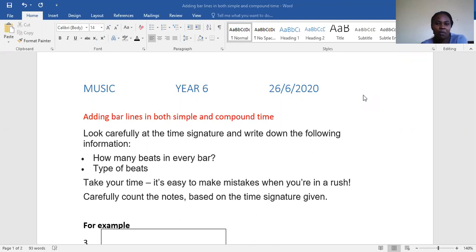The first thing I want us to note down is that you must look at the time signature so that you can identify how many beats we have in every bar. After identifying the number of beats in every bar, then you should look at the type of beat.